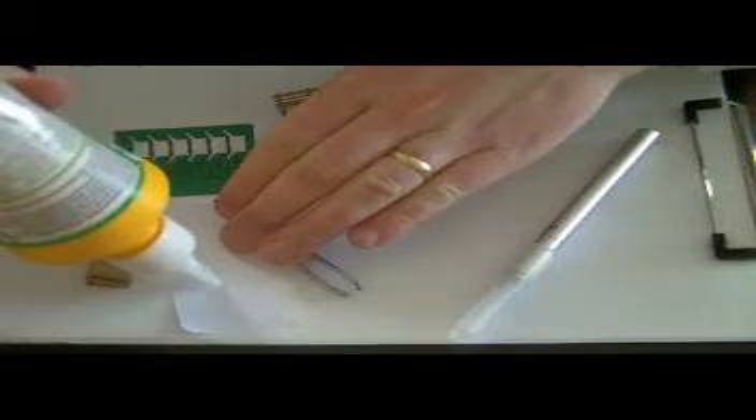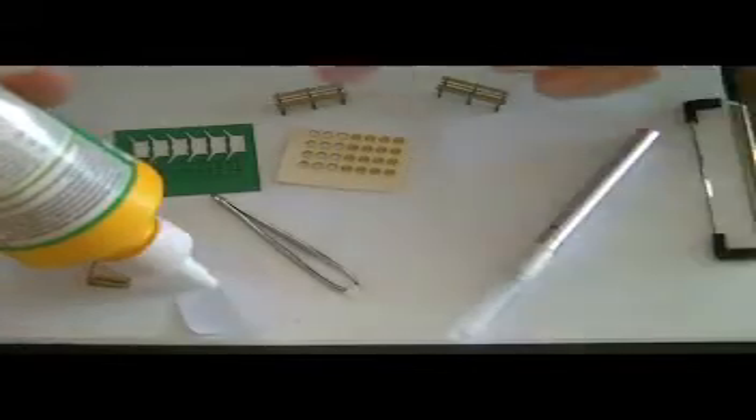What I do is I pop a little blob of it onto some paper, just a bit of scrap paper here, and then use another little piece of paper just to put the blobs on there. So, let's clear this and make our first one.